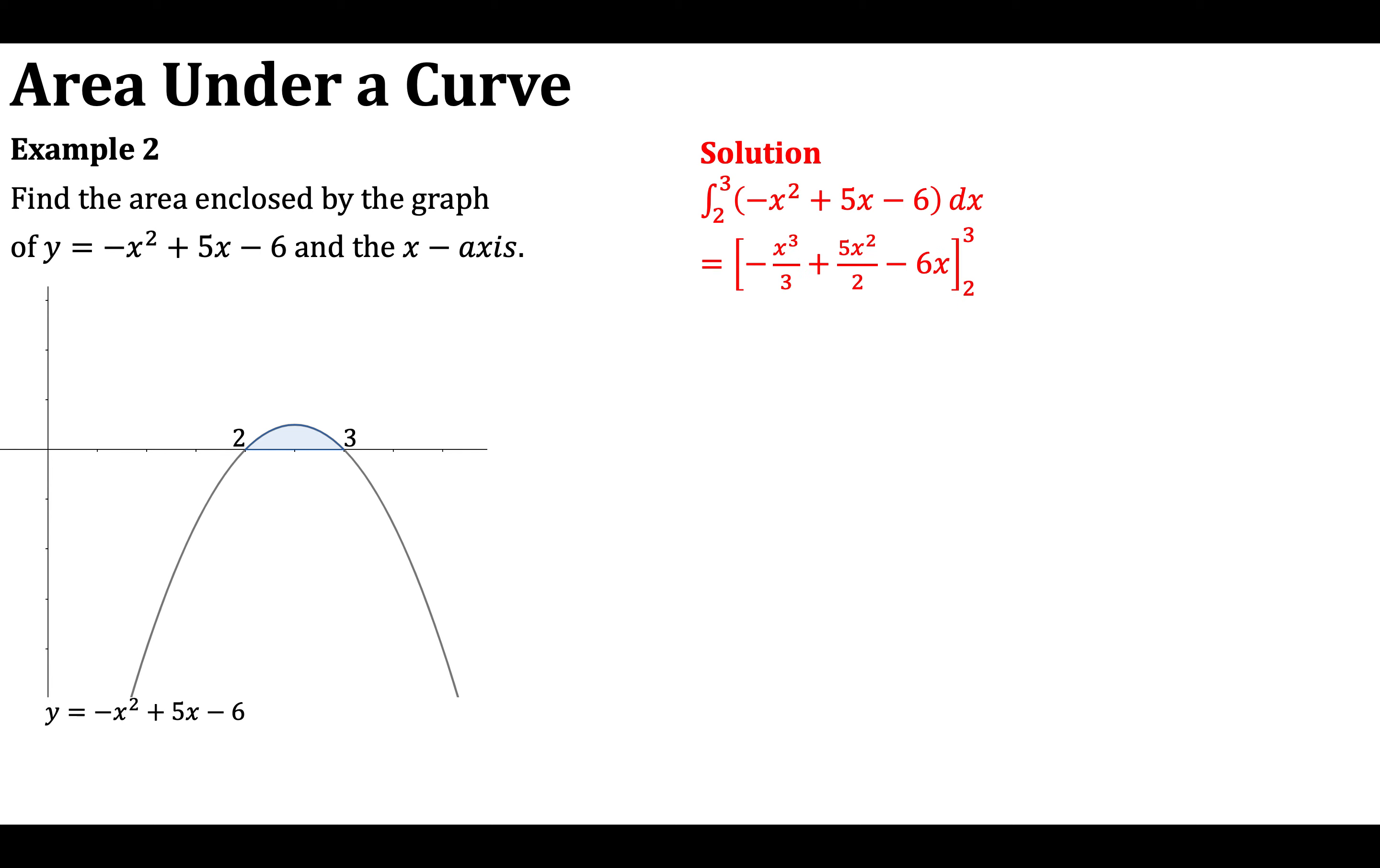So we've got negative x cubed over 3 plus 5x squared over 2 minus 6x. And then substituting 3 in and substituting 2 in. And we need to find the difference between those. So in our first bracket we get negative 27 thirds plus 42 halves minus 18. And we're subtracting negative 8 thirds plus 20 halves minus 12.